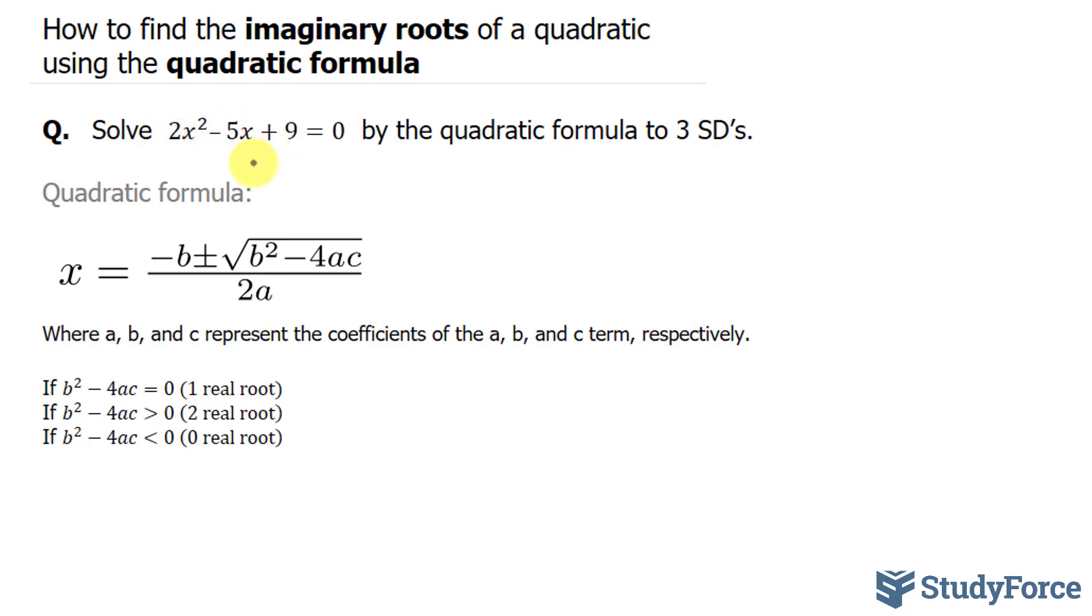In our equation, we have an a term of 2, and that's the coefficient of the x squared term. We have a b of negative 5, and that's the coefficient of the x term, and the constant is represented by c.